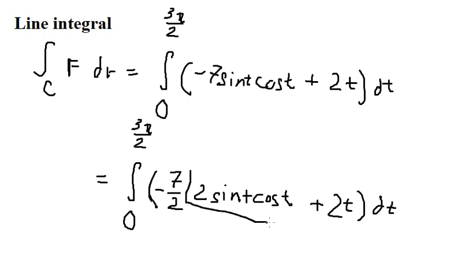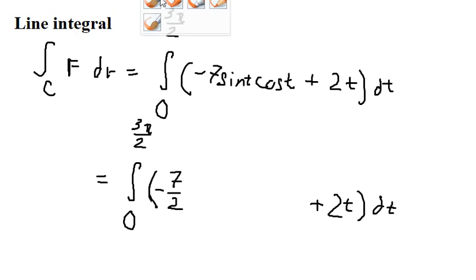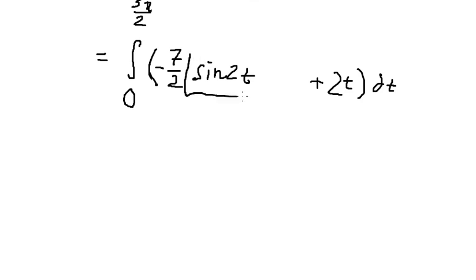We know that 2 sin t cos t, we change by sin 2t. The integration of sin 2t with the negative, we will have 7 over 2 and 1 over 2 cos 2t.